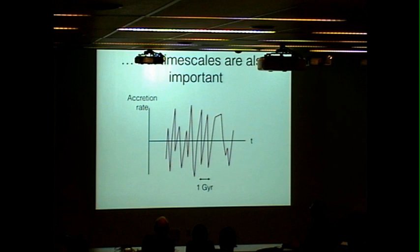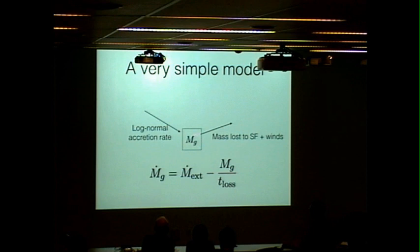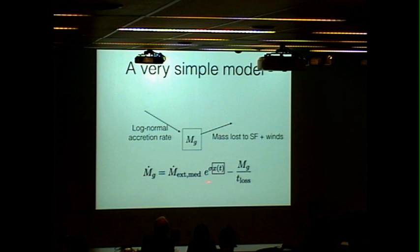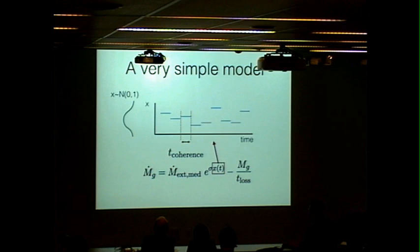we produced a very simple model. This is a standard bathtub model. So here's my galaxy. It has a gas mass, and we feed it with a log-normal accretion rate, and the galaxy produces stars and winds at some rate proportional to its current gas mass. So it's a very simple model. This accretion rate we separate out into a slowly varying median accretion and a potentially rapidly varying log-normal component. And the way this works is at fixed time intervals, we draw a new value of the accretion rate. So the accretion rate will look something like this in log space.